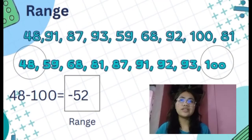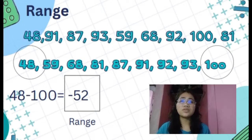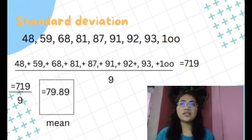Next, we have another given data set. We arrange the data, then subtract the least number from the greatest number. So 100 minus 48 equals 52. Our range is 52.